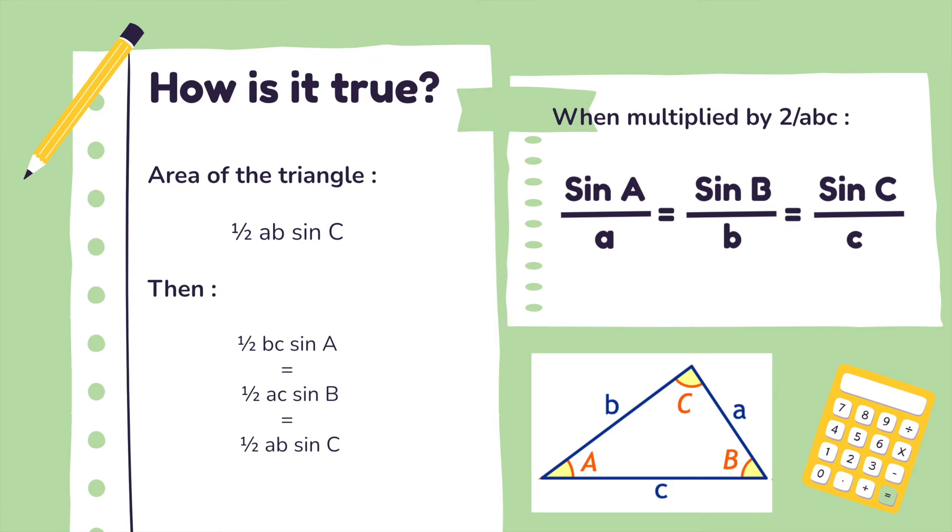Then, why is the law of sines true? So first, the formula to find the area of the triangle is 1/2 ab sin C. And as the sides are not assigned, it doesn't matter which sides are chosen as a, b, and c.